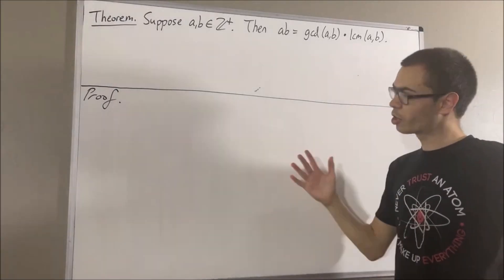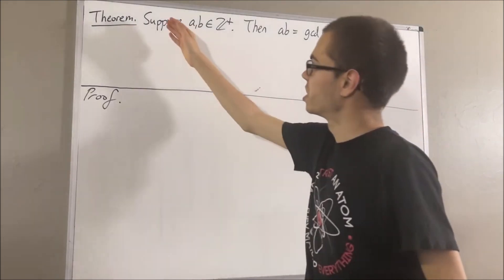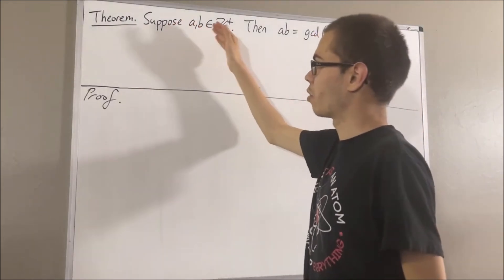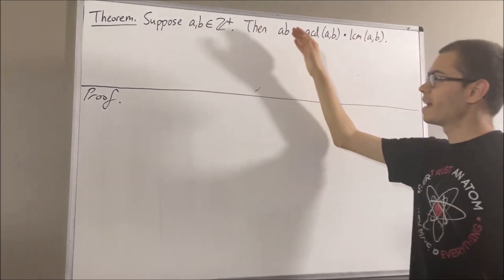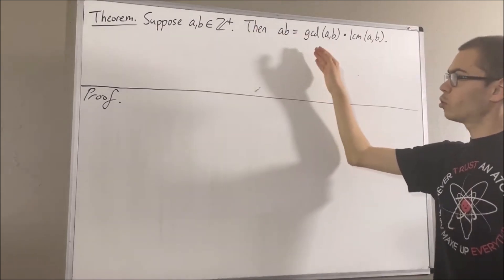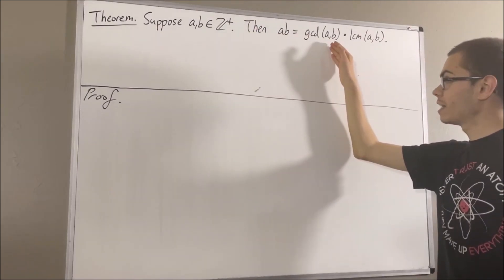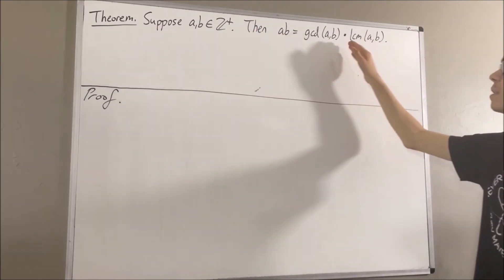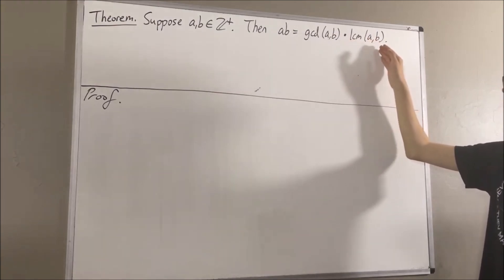In this video, we are going to prove the following theorem. Suppose A and B are positive integers. Then A times B is equal to the greatest common divisor of A and B times the least common multiple of A and B.